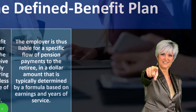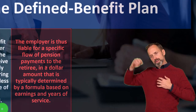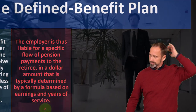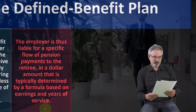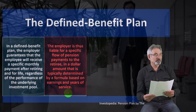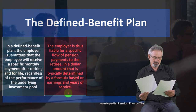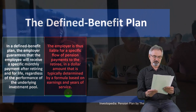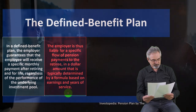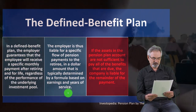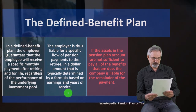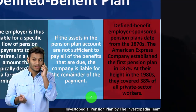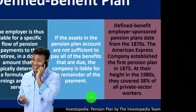This guarantee can be problematic — if the investment pool performs poorly, the commitment still holds for life, and it involves unknowns like how long the person will live. Poor calculations and poor investments can put companies in trouble. The employer is liable for a specific flow of pension payments, typically determined by a formula based on earnings and years of service.